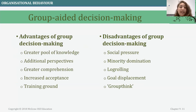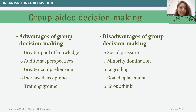Looking at the advantages and disadvantages of group decision making: the advantages include a greater pool of knowledge, additional perspectives from different people involved, greater comprehension, increased acceptance, and serving as a training ground. However, there are also disadvantages such as social pressure, minority domination, log-rolling, goal displacement, and groupthink.